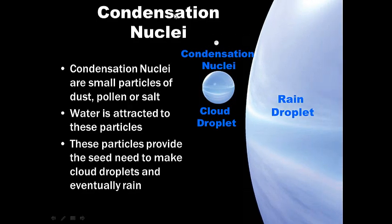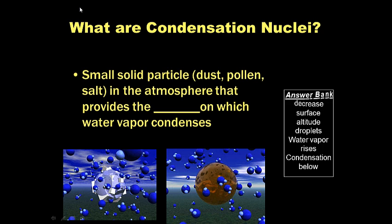It takes thousands of these tiny water droplets to make one rain droplet, if you recall. So, here's condensation nuclei, here's a cloud droplet, here's a rain droplet, for comparison. So, condensation nuclei are small particles of dust, pollen, or salt. Water is attracted to these particles, and they provide the seed to make cloud droplets, and eventually rain.